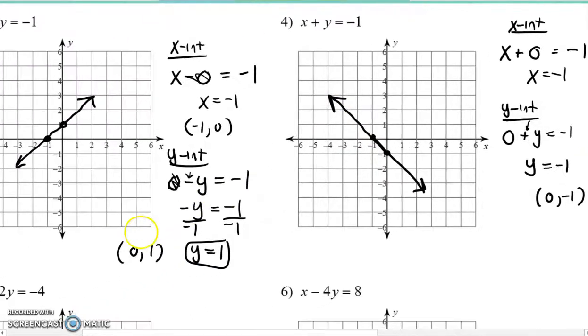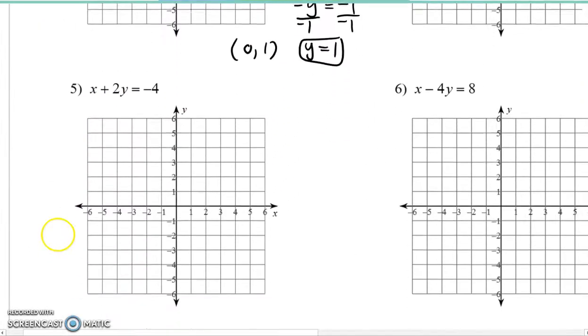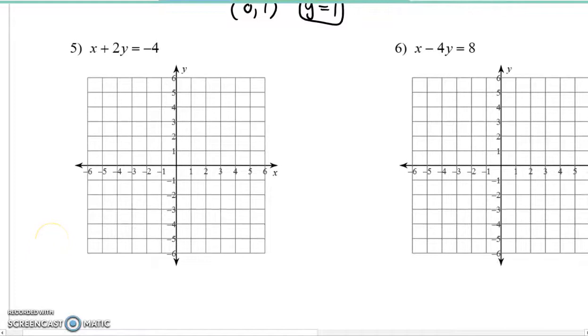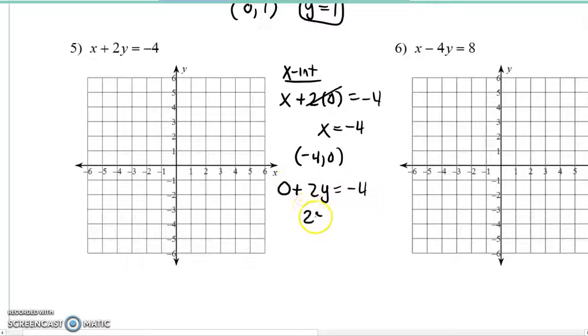Okay. Two more to go. Two more to go here in the video answer key. Let's go to number five now. So, start with our x-intercept. I always like to start with the x-intercept. I don't know why. Just x comes before y in the alphabet. x plus two times zero equals negative four. That goes away. So, x is just simply equal to negative four.